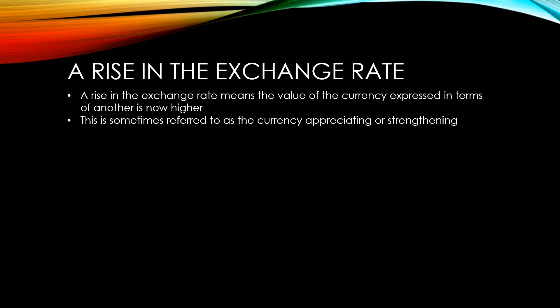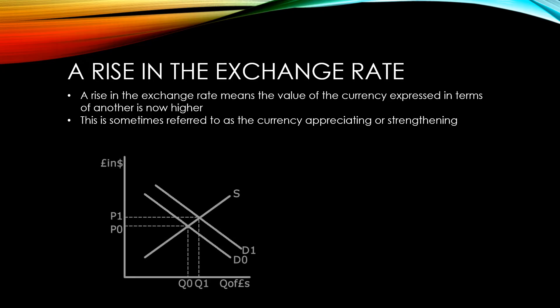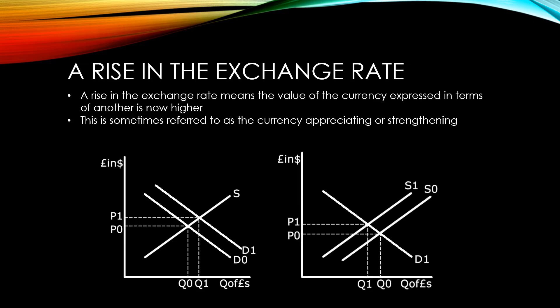There are two key ways this might happen. A right shift of demand is likely to lead to both an increase in the price of the pound and an increase in the quantity of pounds traded. A decrease in the supply of the pound would lead to less pounds being traded but would also have the effect of increasing the value of the pound.